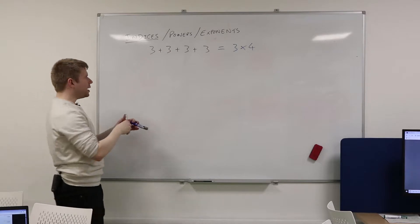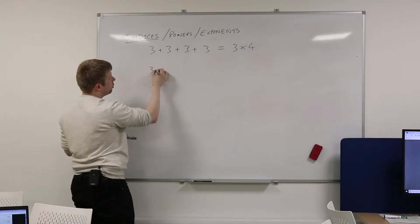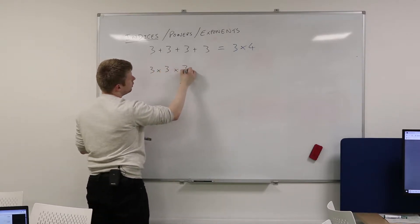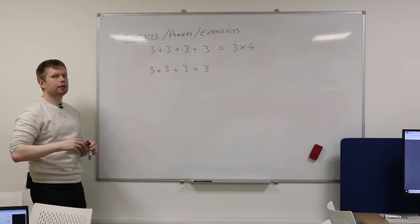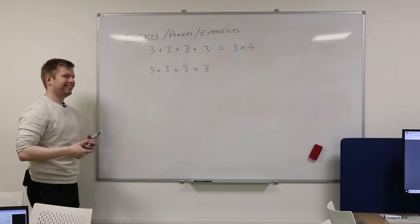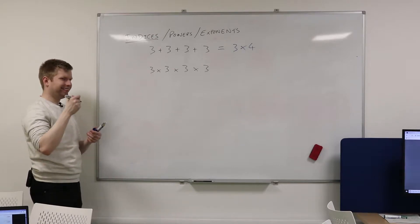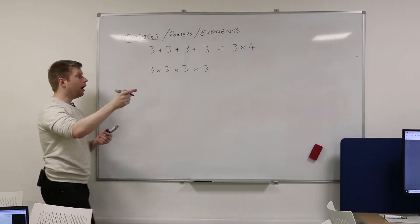So in a similar kind of way, is there an abbreviation or a shortcut for this? 3×3×3×3. Go on, Megan. 2 times the power of 4. Ah, good.